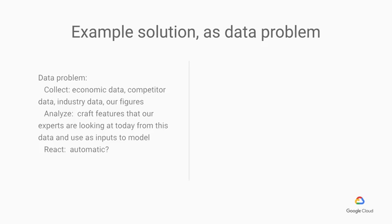The third framing is as a data problem. What kind of data do we need to collect? For training, we need all the data, but also for prediction, we need to collect all the data except for what we can expect the end user to give us. So we need to collect the economic data, the competitor data, the industry data, and data from our company itself. We need to analyze all these datasets so that we can craft features that our experts are looking at today, and use those features as inputs to our model.